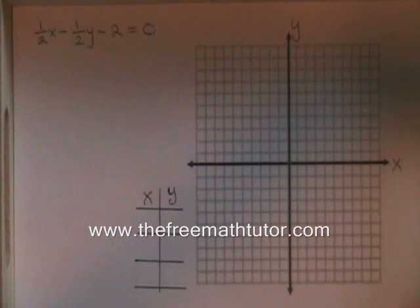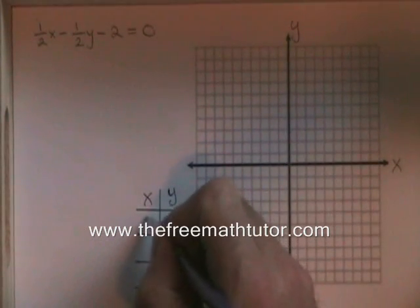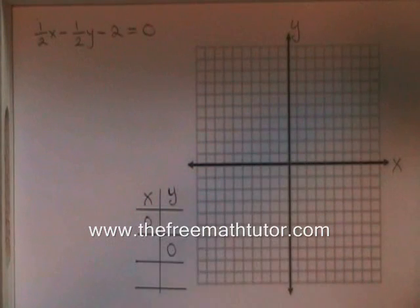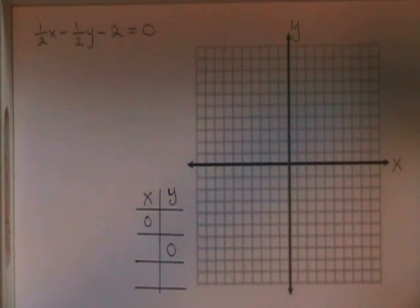Let's do the zero-zero trick again. Here we have another equation with both x and y. One-half x minus one-half y minus two equals zero.